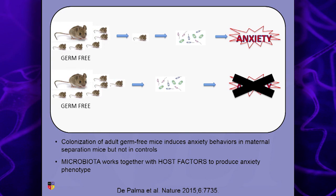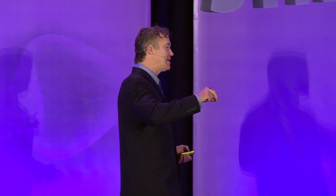Conclusion: there are different layers to this. Feces from a suave, smooth-operating Swiss mouse given to an anxious mouse makes the anxious mouse pretty suave. And if you separate mice from their mothers, they become very, very distressed.